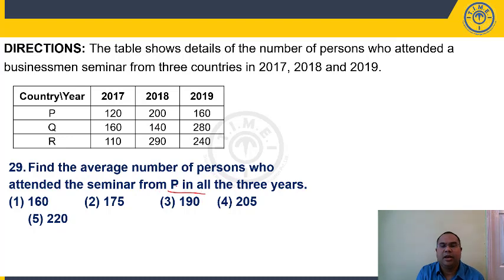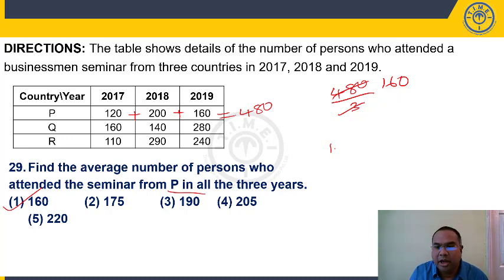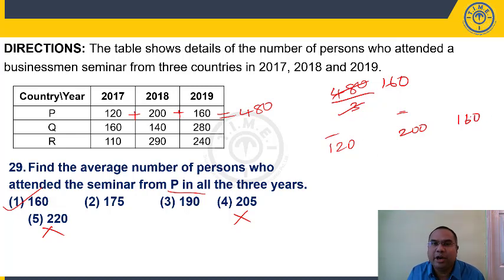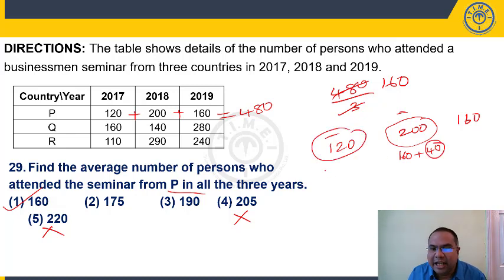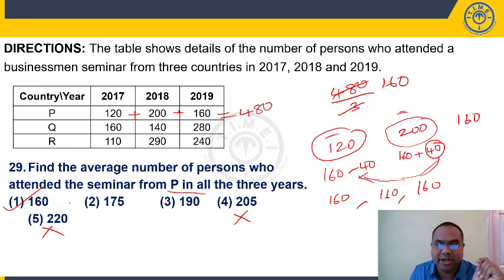Question 29: Average persons from P over all three years. Values: 120, 200, 160. Sum = 480. Average = 480/3 = 160. Alternatively by observation: average must lie between 120 and 200. From options, only 160 falls in that range. Verify: 200 is 40 more than 160, and 120 is 40 less — they balance out. Average = 160. Answer: choice 1.